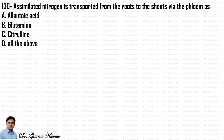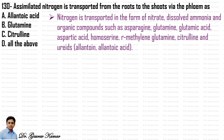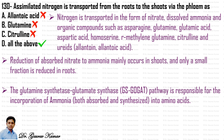Next question: assimilated nitrogen is transported from roots to shoots via the phloem as — what? Nitrogen is transported as nitrate, dissolved ammonia, and organic compounds such as asparagine, glutamine, glutamic acid, aspartic acid, homoserine, citrulline, and ureides such as allantoin and allantoic acid. The answer is all of the above. Reduction of absorbed nitrate to ammonia mainly occurs in shoots. The GS-GOGAT pathway incorporates ammonia into amino acids.